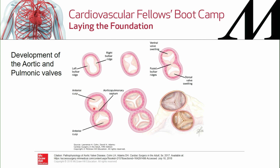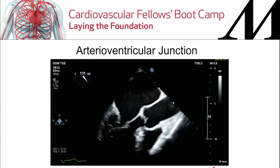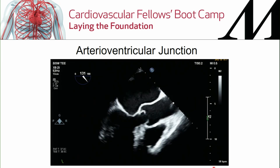The other two leaflets form posteriorly, and the leaflets of the aortic valve form as well. Eventually they have their own discrete fibrous rings forming around both the pulmonic and aortic valves, with the left, right, and non-coronary — or posterior — cusp of the aortic valve forming eventually.